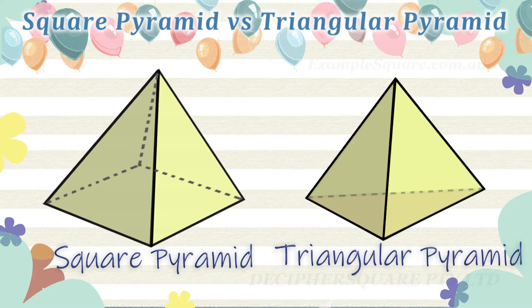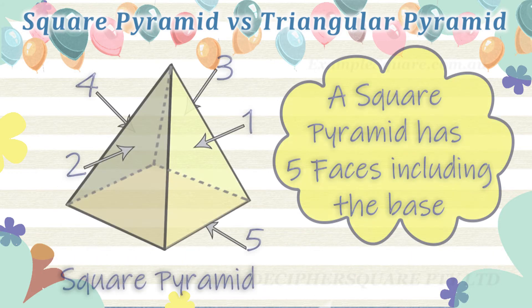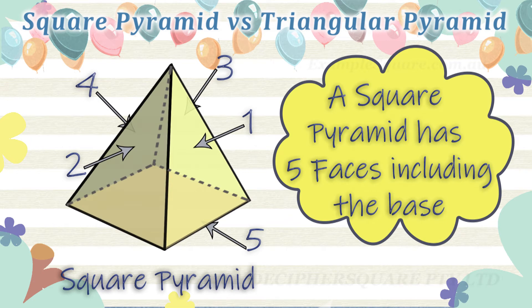Different types of pyramids may have different numbers of faces, edges, and vertices. A square pyramid has five faces: a square-shaped base and four triangular-shaped side faces.